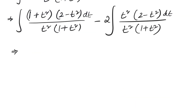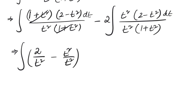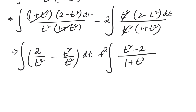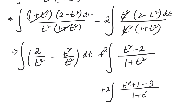We cancel (1 + t²) with (1 + t²), giving 2/t². Then we cancel t² with t², leaving (t² − 2)/(1 + t²). We write t² − 2 as (t² + 1) − 3, so the integral becomes: integral of 2/t² dt minus integral of 1 dt plus integral of (t² + 1 − 3)/(1 + t²) dt.